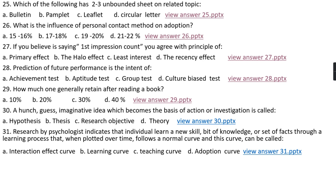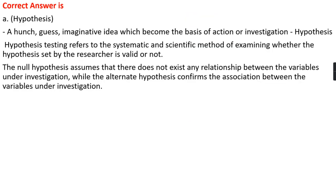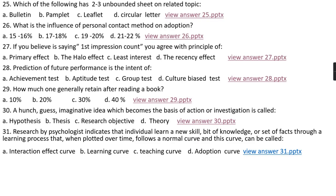Question number thirty: A hunch, guess, or imaginative idea which becomes the basis of action or investigation is called option A, hypothesis; option B, thesis; option C, research objective; option D, theory. The right answer is option A, that is hypothesis. Hypothesis testing refers to the systematic and scientific method of examining whether the hypothesis set by the researcher is valid or not. There are two types: null hypothesis, which assumes that no relationship exists between the variables under investigation, and alternate hypothesis, which confirms the association between the variables under investigation.